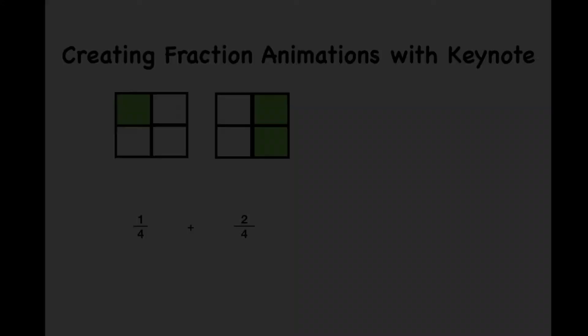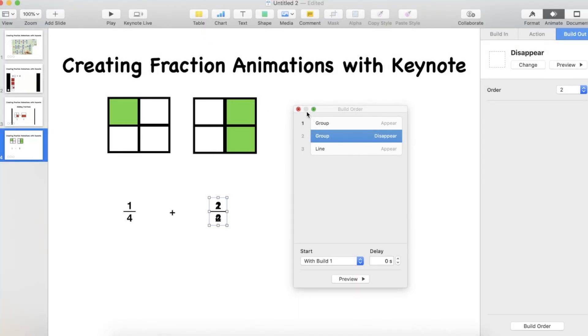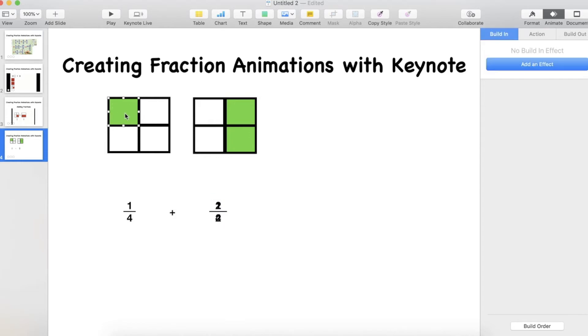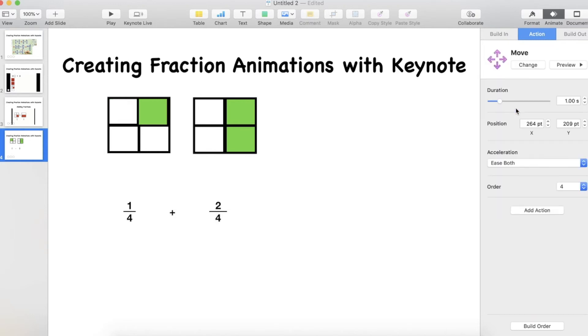The next thing I want to do is actually visualize or show the adding. So remember we made the extra green box over here. I'm going to add an animation to that. So this animation is actually going to be an action now. And I'm going to add the effect of moving. But you can actually now drag this to where you want it to go. So now when that animation runs, the green square will go from here all the way over there to give me a representation of 3 quarters.